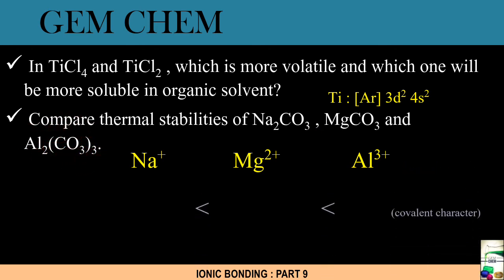So ultimately we get the covalent character. Now we have to derive the thermal stability. Since we are seeing that the order follows like this, we can say that when there's an increase in the covalent character, the lattice gradually becomes weaker, thereby accounting for gradual decrease in the thermal stability from Na2CO3 to MgCO3 to Al2(CO3)3. In fact, the polarizing power of Al³⁺ is so high that even at room temperature it dissociates to form Al2O3 + CO2.